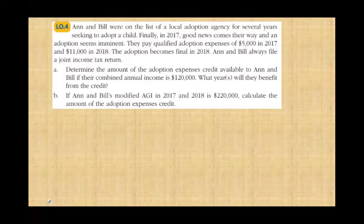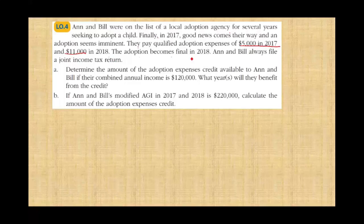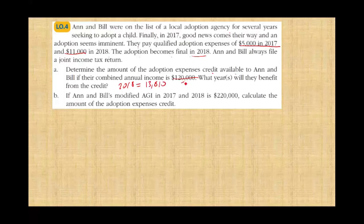Let's look at another example. Ann and Bill were on the list of a local adoption agency for several years seeking to adopt a child. Finally, in 2017 good news came their way and the adoption seemed imminent. They paid qualified adoption expenses of $5,000 in 2017 and $11,000 in 2018. The adoption became final in 2018. Ann and Bill always filed a joint return. With combined income of $120,000, they can claim the maximum credit of $13,810 in 2018, since their total expenses of $16,000 exceed the credit ceiling.